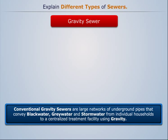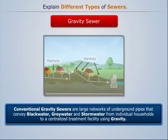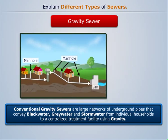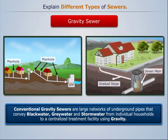Conventional gravity sewers are large networks of underground pipes that convey black water, gray water, and storm water from individual households to a centralized treatment facility using gravity. These sewers use gravity as a driving force and work effectively in places having suitable slopes or with pipes laid at slopes to carry sewage easily.